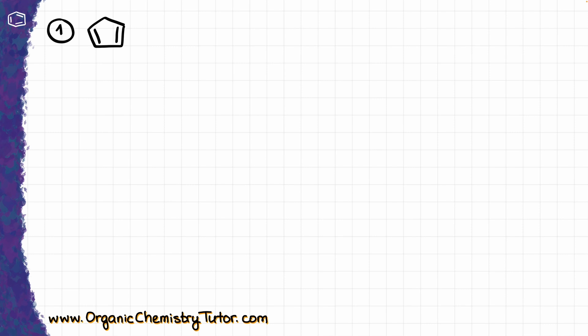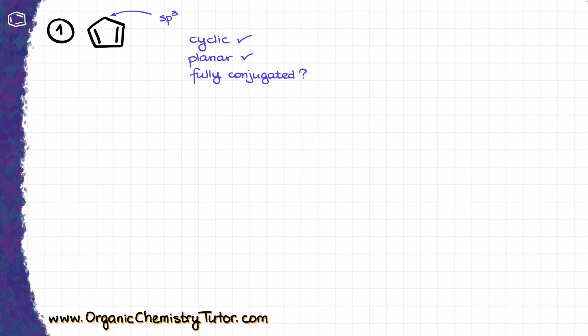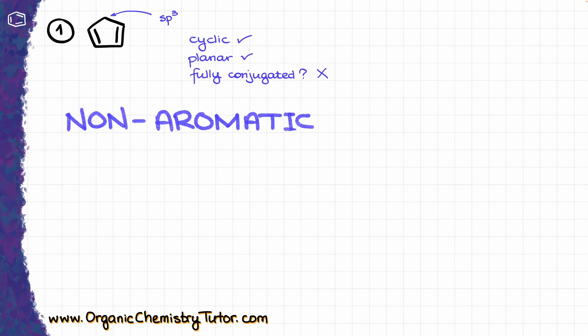Moving to our first example, we can see that this molecule is cyclic. It is a relatively small molecule with a lot of sp2 hybridized atoms, so most likely it is also going to be planar. However, when it comes to full conjugation inside this molecule, we run into a problem, because this atom over here is CH2, and as a CH2 group connected to two other carbons, that is going to be an sp3 hybridized species. So this molecule is not fully conjugated within the cycle, meaning it is non-aromatic.